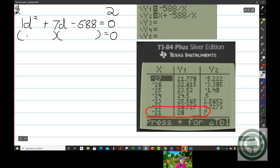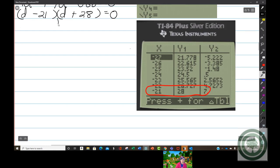I take d minus 21 and plus 28, and then I set each factor equal to zero. D minus 21 equals zero, d plus 28 equals zero. I add 21 to both sides, so I get d equals 21. I subtract 28 from both sides, I get d equals negative 28.